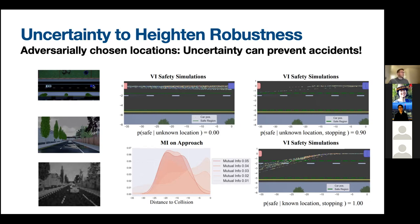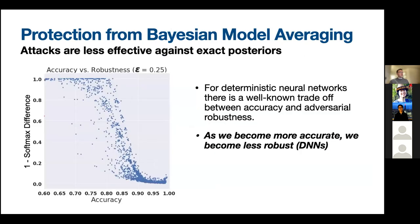We can stop the car when the situation becomes unsafe or when uncertainty becomes too high. A car driving about 100 meters behind a white car: without uncertainty-based stopping, it crashes 100% of the time instead of performing a lane change. In a more unknown scenario, we're able to stop the car using a combination of mutual information and probabilistic robustness. That's one way being Bayesian can help robustness through uncertainty.